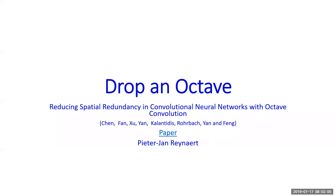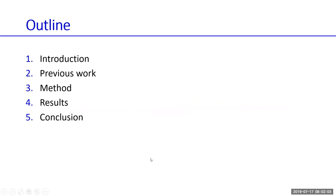The outline is: first we'll introduce the problem, then go a little into previous work and papers written on this subject, then the methods where we go deeper into how they do the convolution, and finally discuss the results and conclusion.